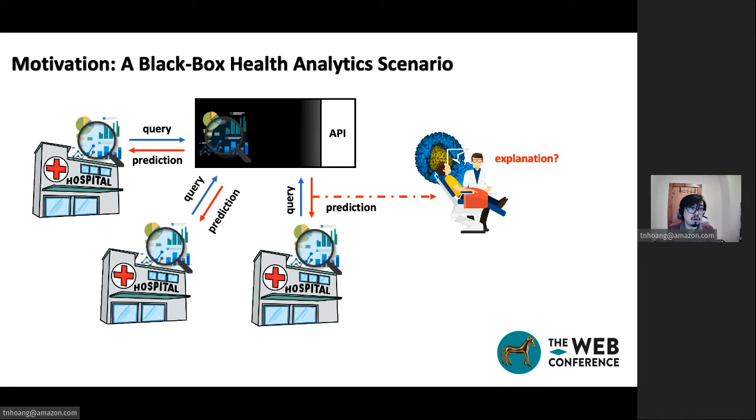In such scenario, it is a common practice for a provider to train a private model using their proprietary data and release the trained model as a black-box service. For example, the IQVIA human data science cloud provides such machine learning service.